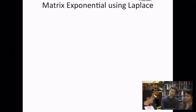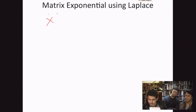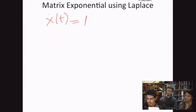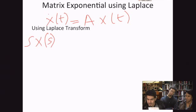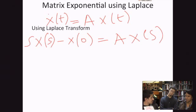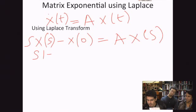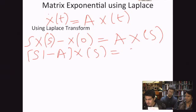So, consider a linear time invariant system. x dot t is equal to A into x(t). You can use the Laplace transform to convert this into Laplace domain. So, s into x(s) minus x(0) is equal to A into x(s). So, just bring this over to the other side. (sI minus A) into x(s) is equal to x(0).